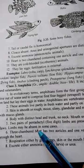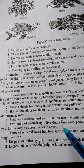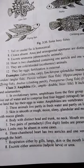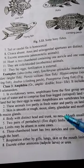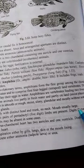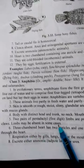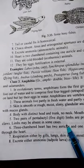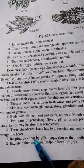They have two pairs of pentadactyl limbs. These are digits — toes without claws. Limbs may be absent in some cases.